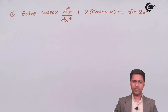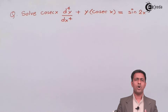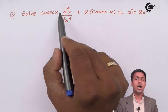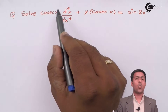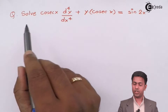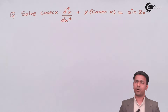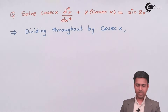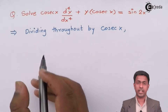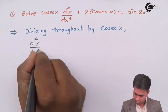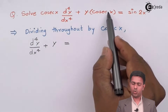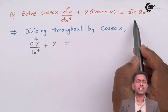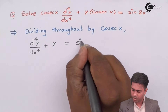We can't solve this problem until we convert it into standard form of a higher order differential equation. In the standard form, the coefficient of the highest order term must be one. To make it one, we divide throughout by cosec x — the cosec x terms cancel and we get sine 2x upon cosec x on the right hand side.